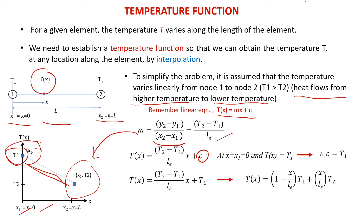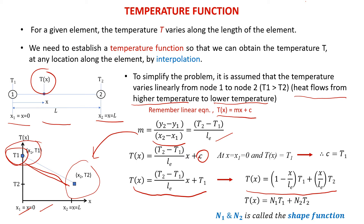Once we have determined M and C, we can write our temperature function as shown in this equation. Therefore, we can simplify our temperature function as T equal to N1*T1 plus N2*T2, where N1 and N2 are called the shape functions.